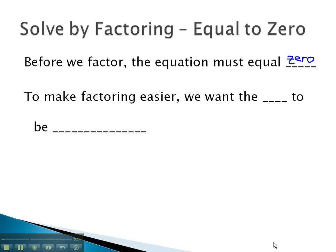As we do this, to make the factoring easier, we will want to make the x squared positive. It is very important the equation equals 0 before we factor, because the 0 product rule requires the equation to equal 0 first before we set each factor equal to 0.